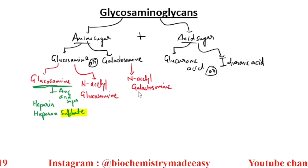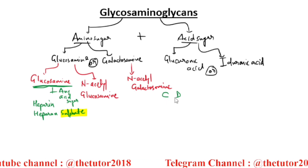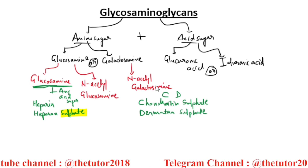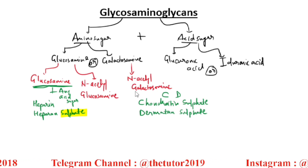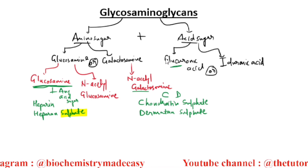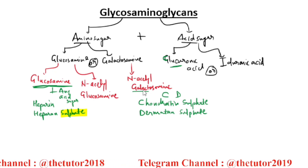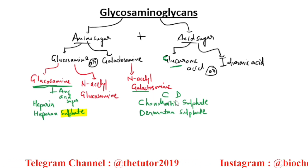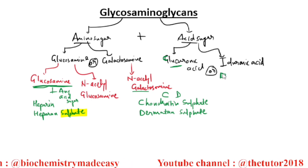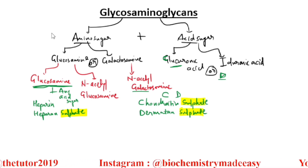For N-acetyl galactosamine, remember C and D — chondroitin sulfate and dermatan sulfate. N-acetyl galactosamine with glucuronic acid is chondroitin sulfate — C for glucuronic acid. N-acetyl galactosamine with iduronic acid is dermatan sulfate — D for iduronic acid. Both contain sulfate.